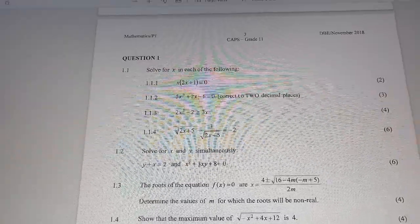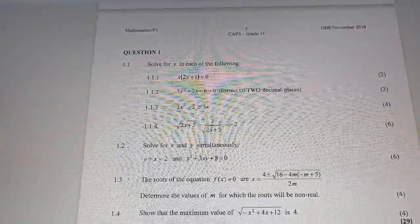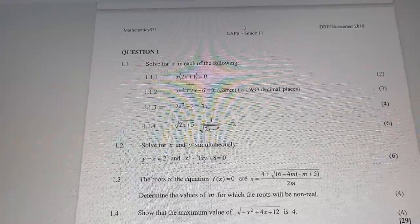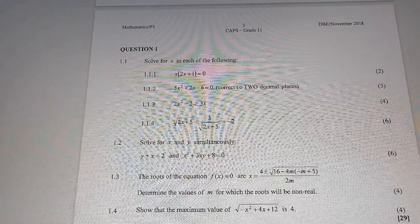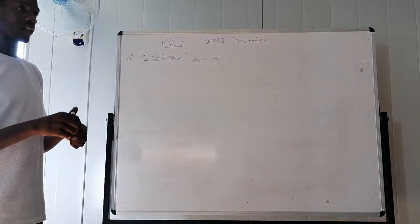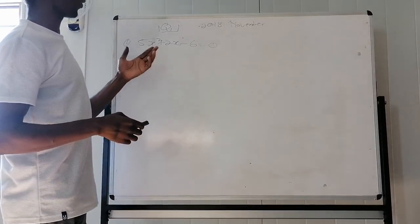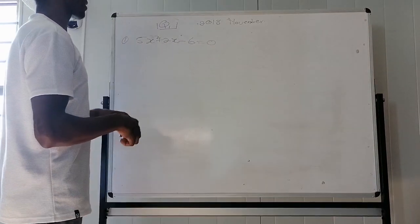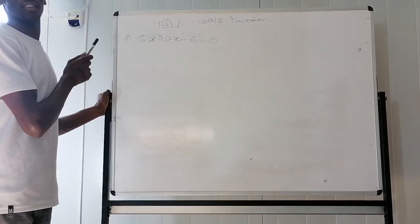Question 1.2. It says 5x squared plus 2x minus 6 is equal to 0. So this one, guys, automatically when they say correct to two or three decimal places on your mind, you must know that you must use a quadratic formula.